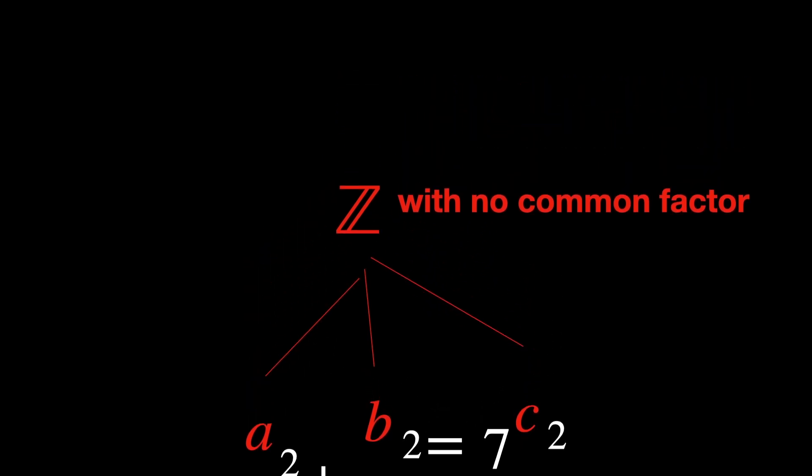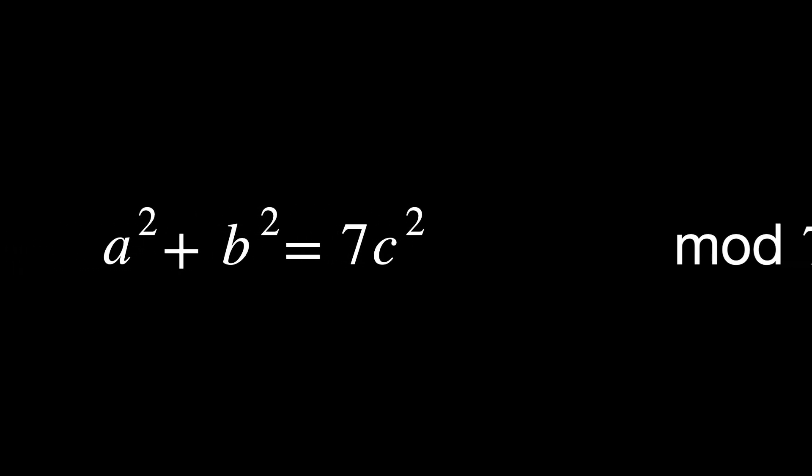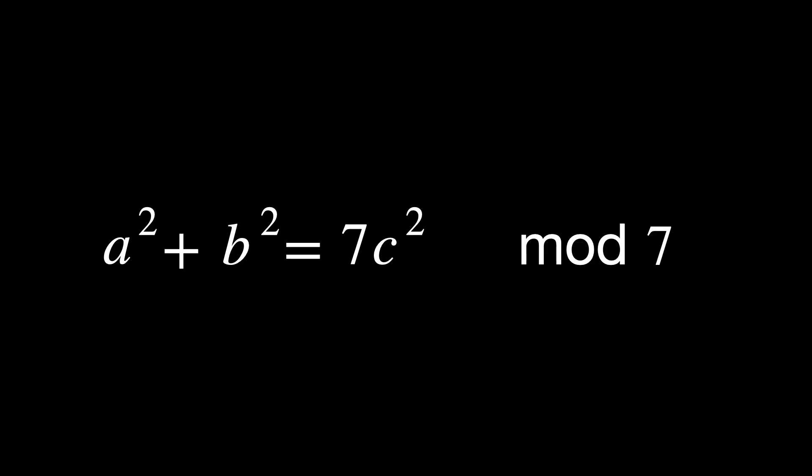Here's something interesting we can do. Arithmetic geometry frequently uses the local-to-global principle, meaning that by checking solutions modulo 7 — the local property — we deduce global consequences. If no solutions exist modulo 7, then no integer solutions exist globally. Here we will reduce the equation modulo 7. By reducing modulo 7, we can check whether the equation is even consistent within this modular system. If no solutions exist modulo 7, there can't be any integer or rational solutions in general.